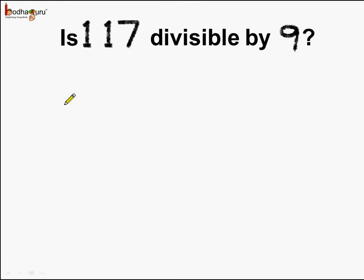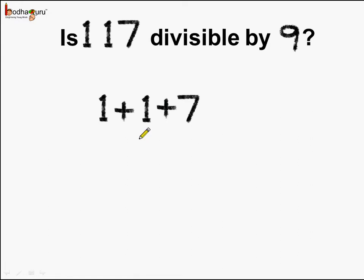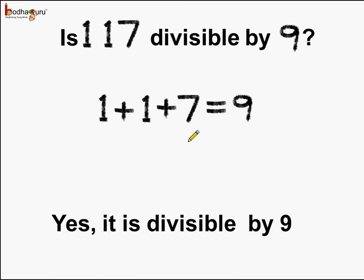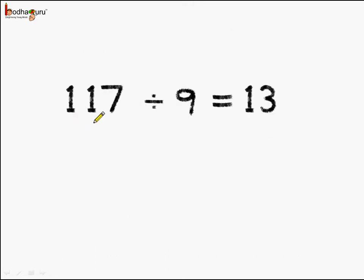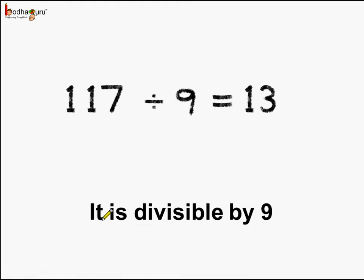Next let us see if 117 is divisible by 9 or not. Let's add up the digits: 1 plus 1 plus 7 equals 9, and 9 is divisible by 9. So we can say 117 is divisible by 9. Therefore, 117 divided by 9 is equal to 13. It is divisible by 9 as the sum of the digits is divisible by 9.